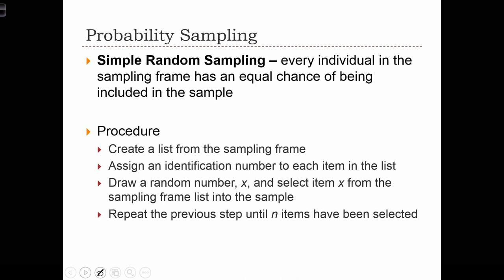A potential procedure for simple random sampling is to create a list from the sampling frame. We then assign a unique identification number to each item in the list. We draw a random number, x, and select item x from the sampling frame list into the sample. We then repeat this step n times so that at the end of the procedure we've sampled n individuals into our sample.